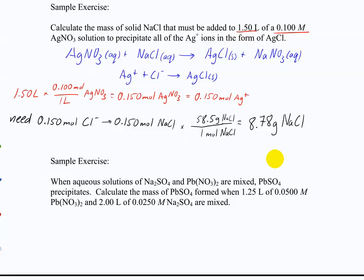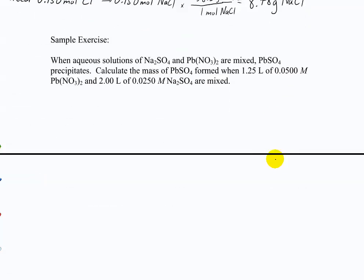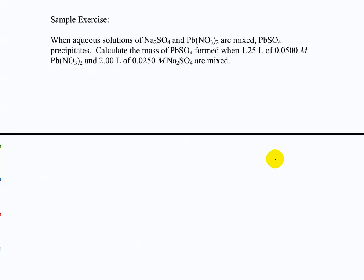Let's try a trickier one: when aqueous sodium sulfate and lead nitrate are mixed, lead sulfate precipitates. The question is how much lead sulfate is formed. The trickier part here is that there are two moles of sodium per mole of sodium sulfate and two moles of nitrate per mole of lead nitrate — so you have to find moles in two different solutions, figure out the limiting reactant, and then find the yield.